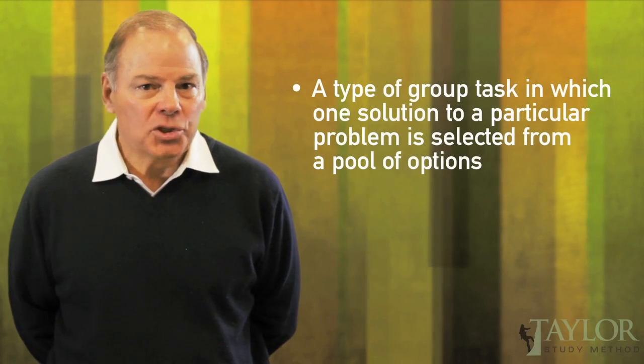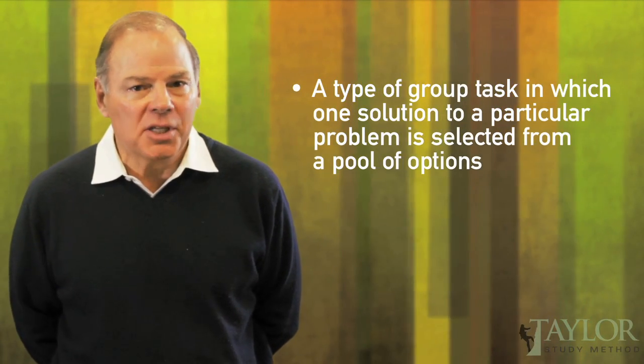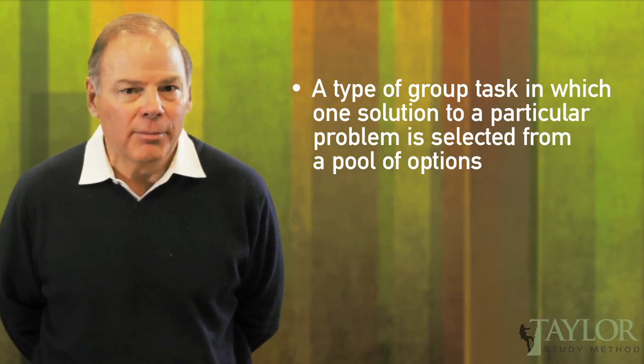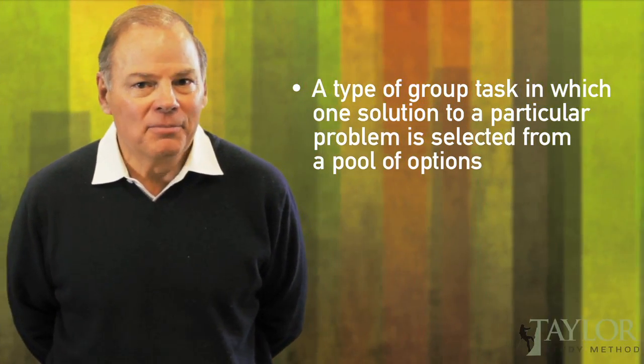A disjunctive task is a type of group task in which the group has to choose one solution to a particular problem from a pool of options. Its counterpart is a conjunctive task, in which a group combines the talents of its members to solve a problem.